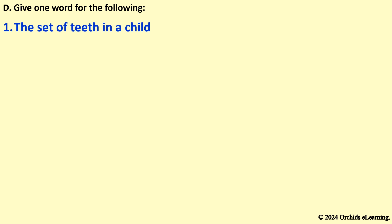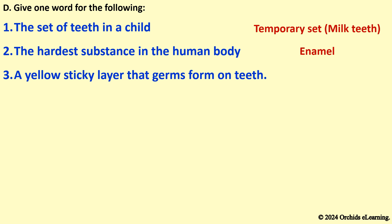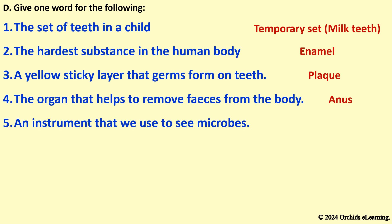Give one word for the following. The set of teeth in a child — Temporary set or milk teeth. The hardest substance in the human body — Enamel. A yellow sticky layer that germs form on teeth — Plaque. The organ that helps to remove feces from the body — Anus. An instrument used to see microbes — Microscope.